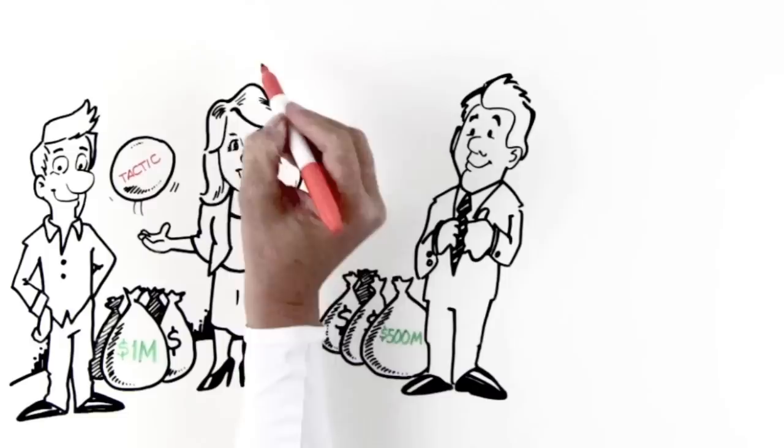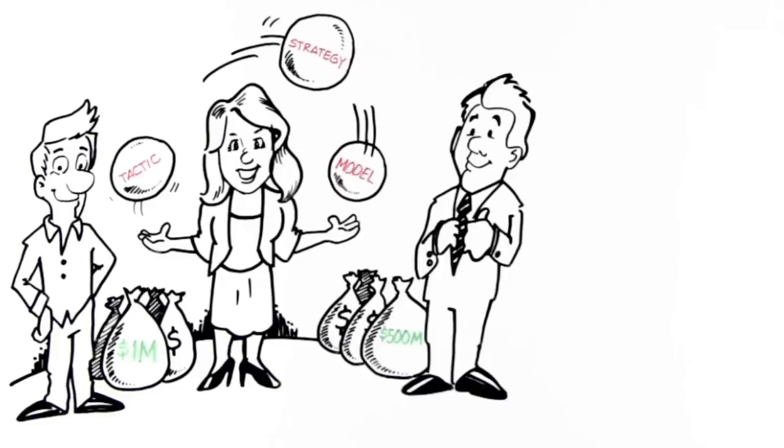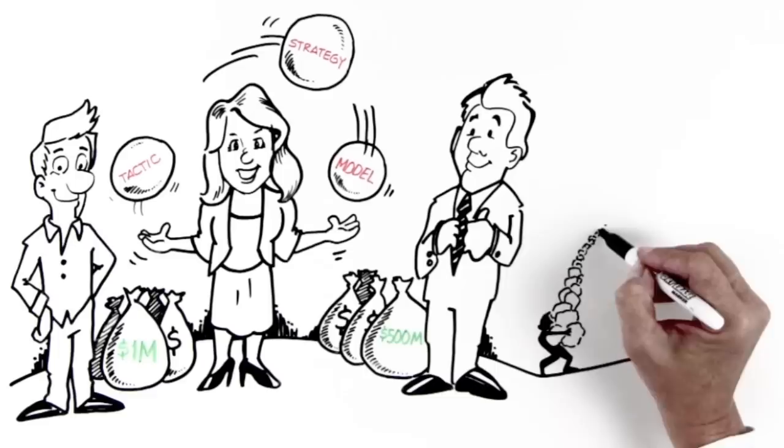My sweet spot with my clients is right around 10 to 30 million, but I see this mistake everywhere, and it is that they don't understand the difference between a business tactic, a business strategy, and a business model.